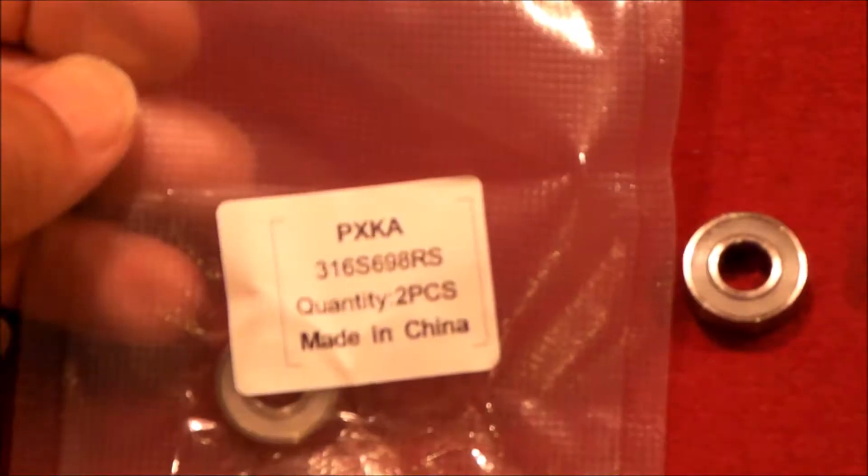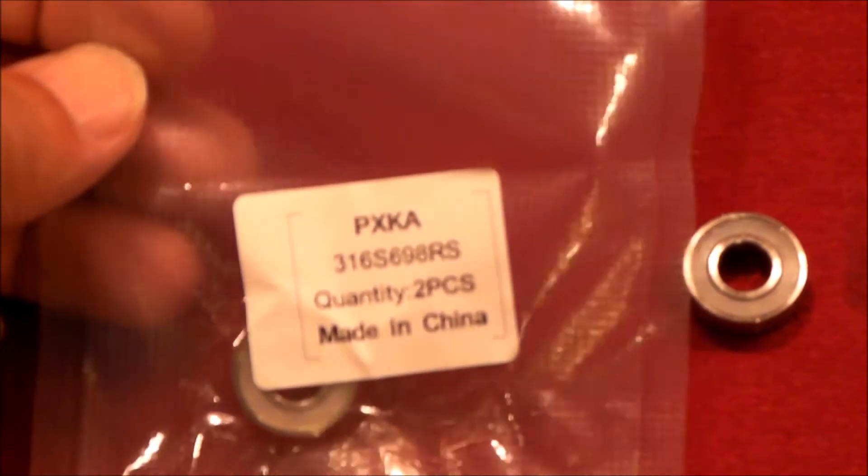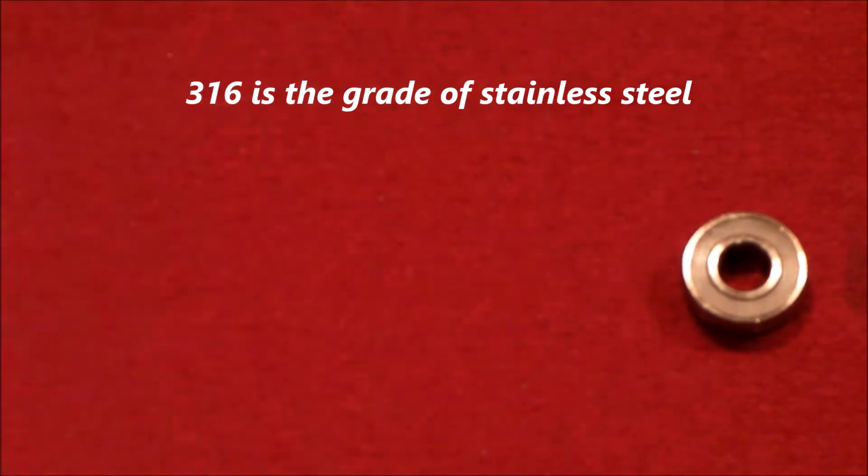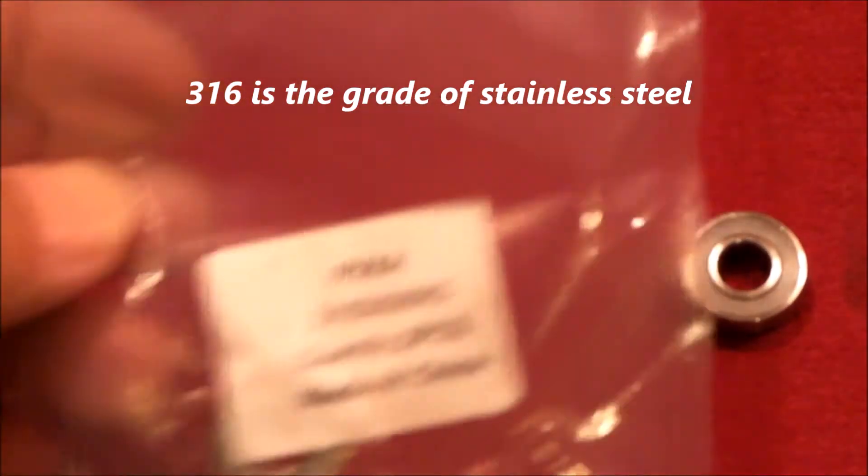Here's what I picked: 698RS. RS stands for rubber seals. It's a 698 bearing. I think the S probably stands for stainless steel.